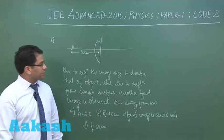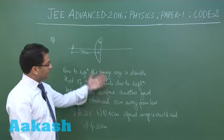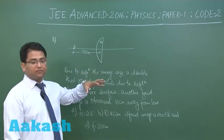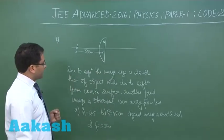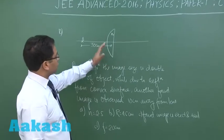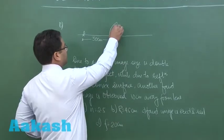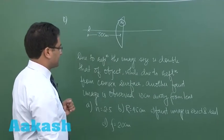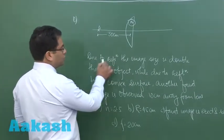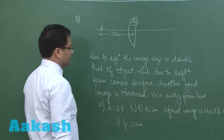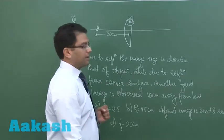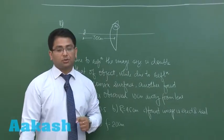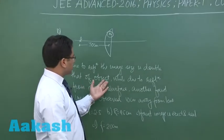Question number 10 is from ray optics and very evident it has been derived from the topic lens. There is a plano convex lens of refractive index n and an object is kept 30 cm from the lens. Now it says due to refraction the image size is double that of object.